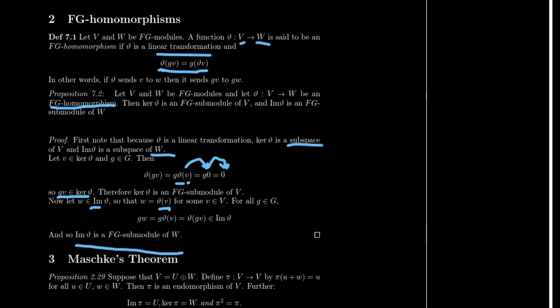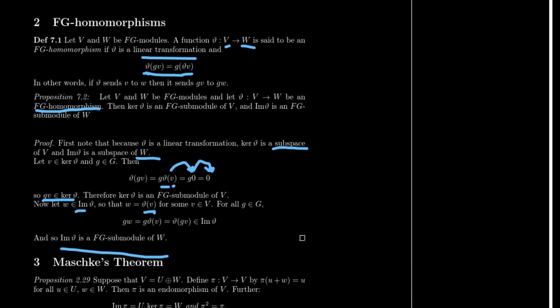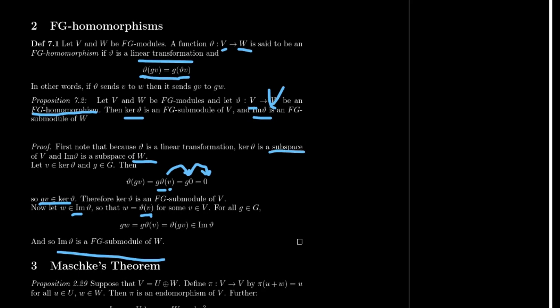What does this get us to do? What proposition 7.2 shows us is that there's a connection between submodules and a homomorphism. What we can do then is say that V and W are actually the same group. Say that W is V. Then what we have is an endomorphism, and what we end up having is that the kernel and the image are both going to be submodules of V. Furthermore, we're going to try to show that there is an excellent property between these two that allows us to say a lot about V and in so doing allows us to say a lot about the original group we started with.